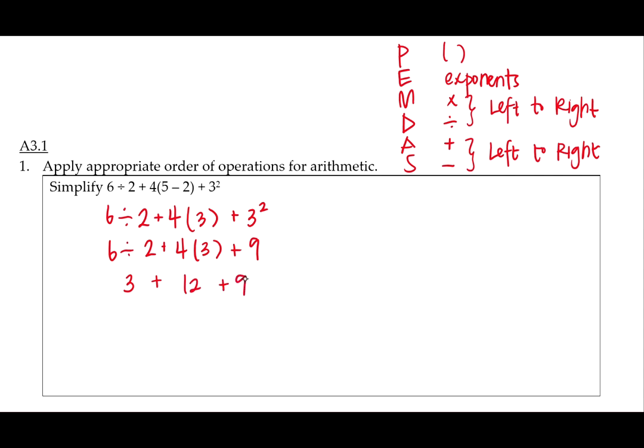I don't have any subtraction other than what I already did in the parentheses. So I'm going to move left to right. 3 plus 12 is 15 plus 9 is 24. And that's our answer calculated using the correct order of operations.